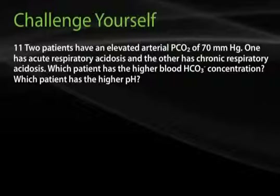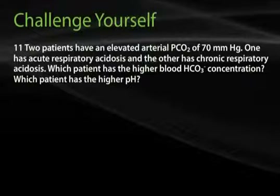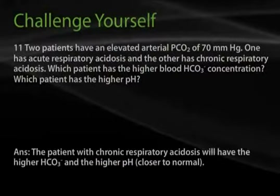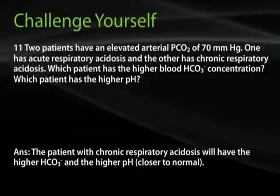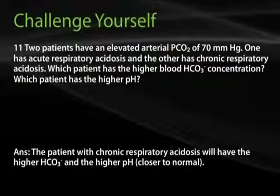Question 11: Two patients have an elevated arterial PCO2 of 70 mmHg — one has acute respiratory acidosis and the other has chronic respiratory acidosis. Which patient has the higher blood bicarbonate concentration, and which has the higher pH? The patient with chronic respiratory acidosis will have the higher bicarbonate concentration and the higher (closer to normal) pH, as they have had time for renal compensation to occur.